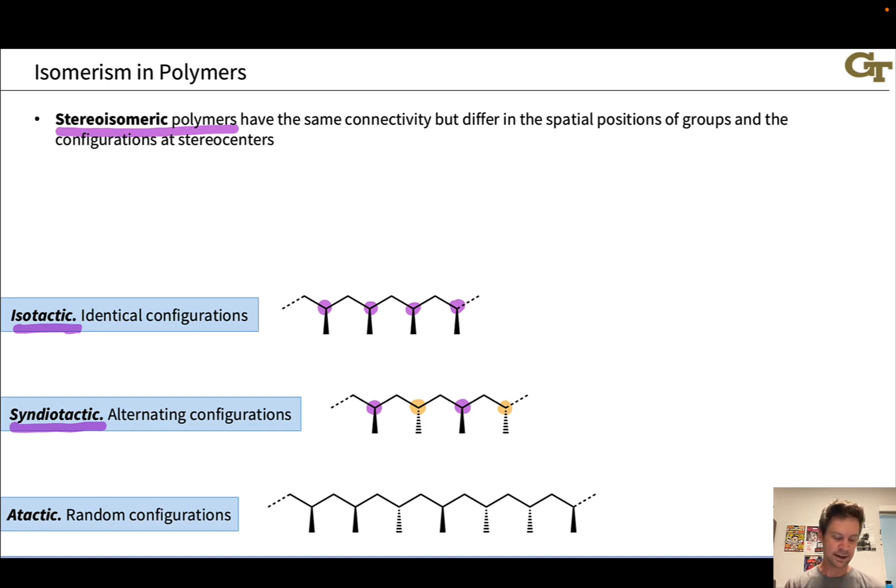The last case here is totally random configurations along the polymer backbone, and that's known as atactic. A evokes this idea that there's no stereoregularity to the polymer chain. If we look at the configurations of stereocenters along the chain, they appear to be entirely random. These three polymers are all stereoisomers of each other. They're all polypropylenes, all polymers of propene, but they differ only in the configurations of stereocenters along the polymer backbone.